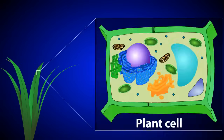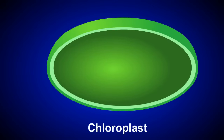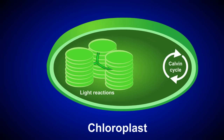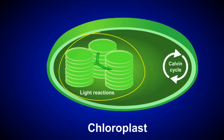The leaves of this plant have cells that carry out photosynthesis. If we zoom in on this photosynthetic plant cell, we can see the chloroplast where the reactions of photosynthesis occur. Photosynthesis consists of two primary steps: the light reactions and the Calvin cycle reactions. In this tutorial, we'll focus exclusively on the light reactions.